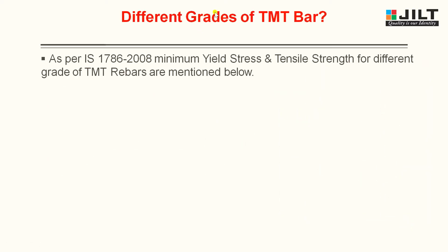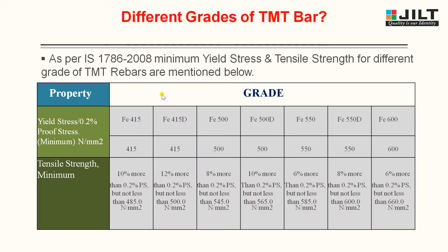Now let us see the different grades of TMT bars available. As per Indian Standard IS 1786-2008, minimum yield stress and tensile strength for different grades are mentioned. Yield stress is expressed as 0.2% proof stress in Newton per mm square. The grades are FE415, FE415D, FE500, FE500D, FE550, FE550D, and FE600.